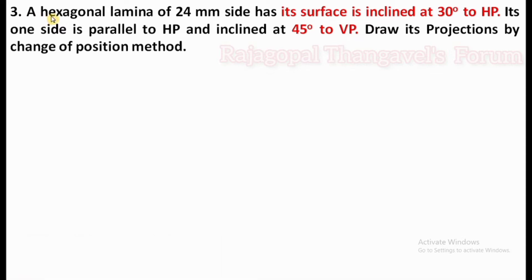In this question, a hexagonal lamina of 24mm side has its surface inclined at 30 degrees to HP. Its one side is parallel to HP and inclined at 45 degrees to VP. Draw its projections by the change of position method.